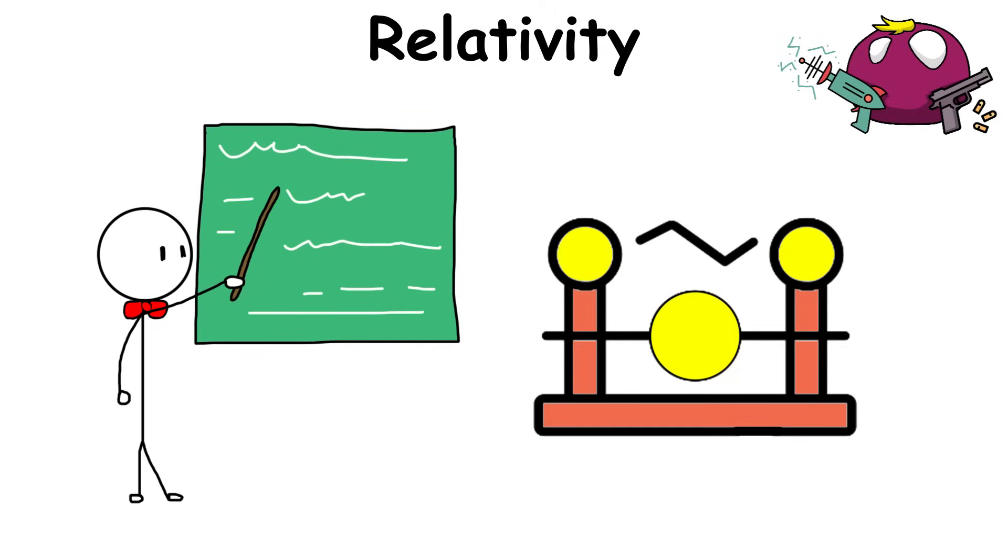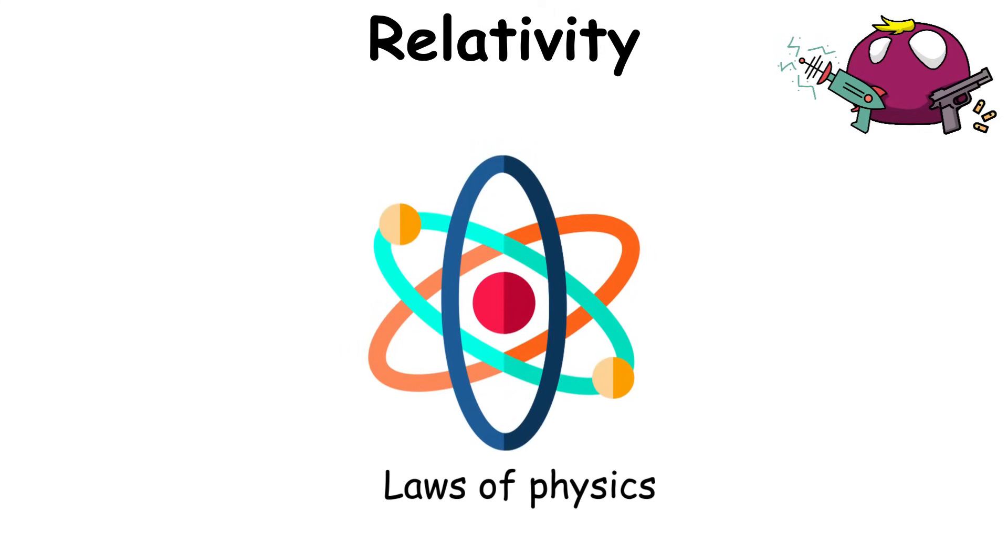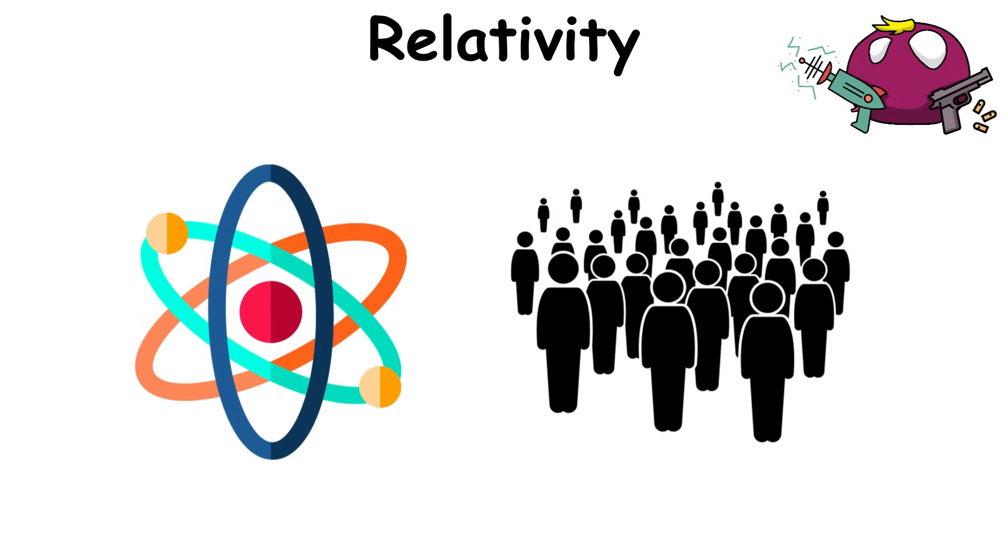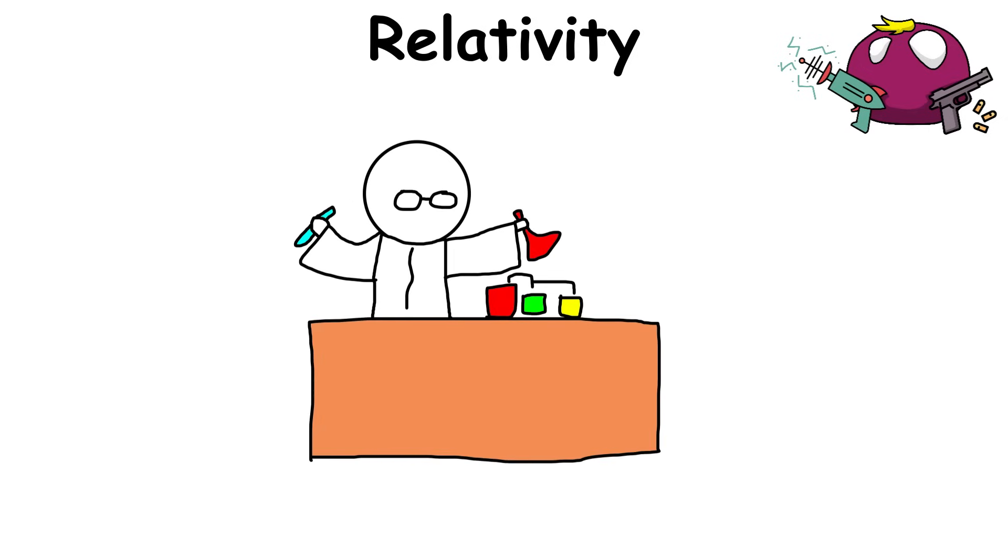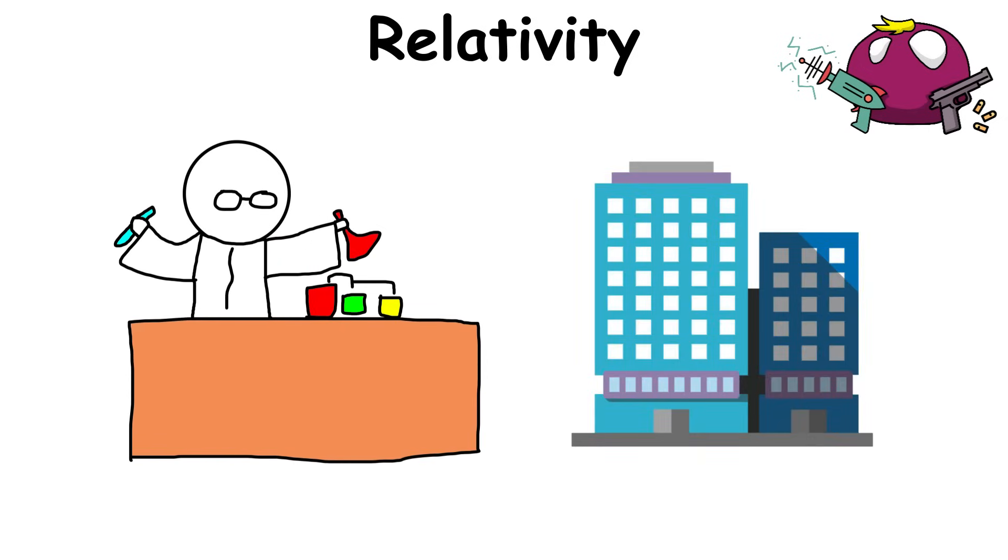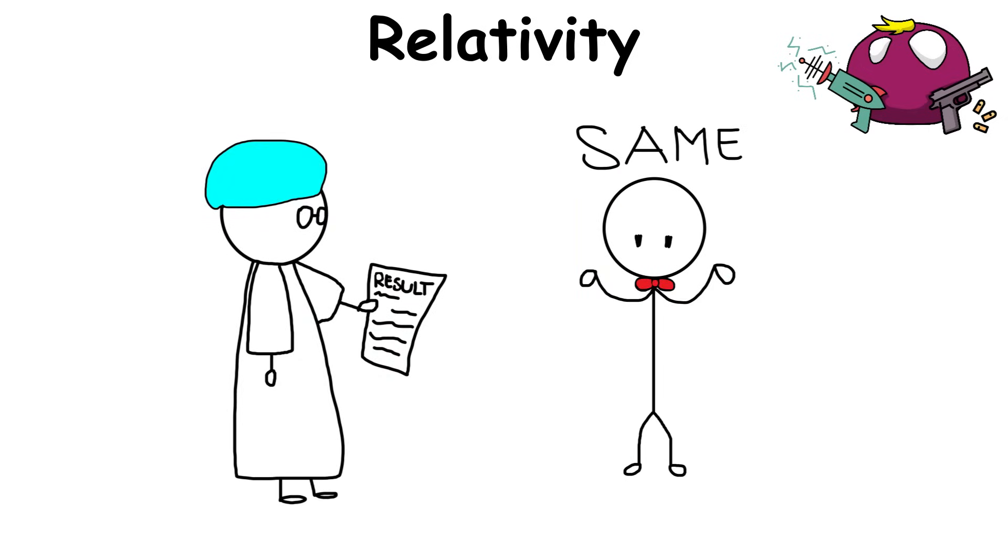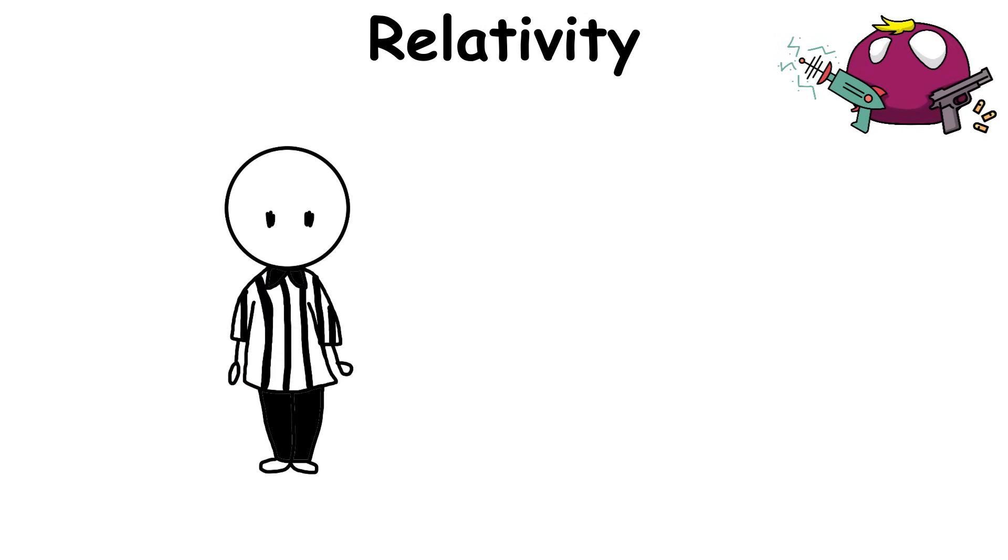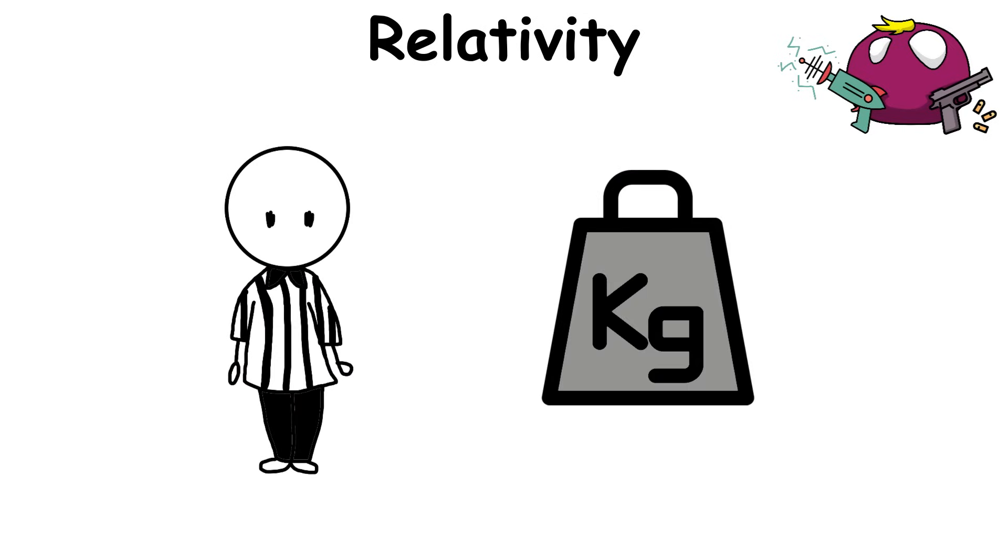Simply stated, the Principle of Relativity states that the laws of physics are the same for everyone, no matter how they move. Whether you're conducting an experiment inside a train or in an office building, the results will always be the same because of this principle. It's the referee who keeps everything fair in a heavyweight physics bout.